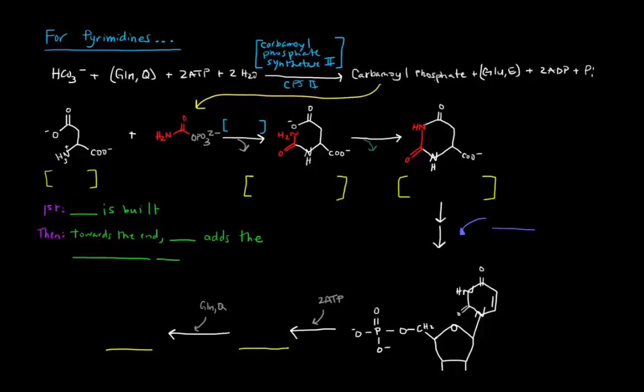So once we have this carbamoyl phosphate, what we're going to do is we're going to take it and add it to this molecule here. What is this molecule here? Well, this is an amino acid that you should recognize. From the way it's drawn here, it might be a little bit tougher to recognize, but this is aspartate. Specifically, I'll put here L-aspartate. Now L-aspartate is going to join carbamoyl phosphate and produce this molecule here. And this molecule is called N-carbamoyl L-aspartate.